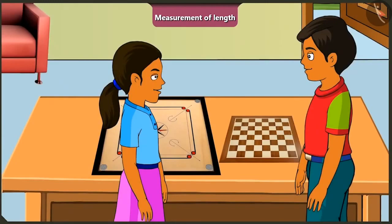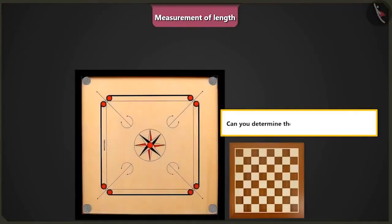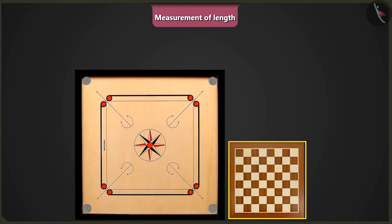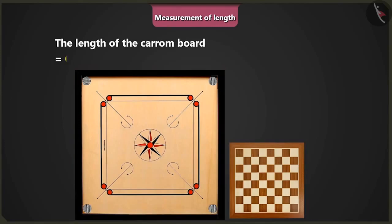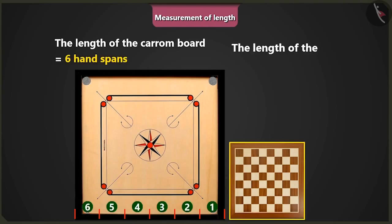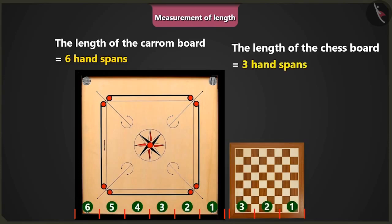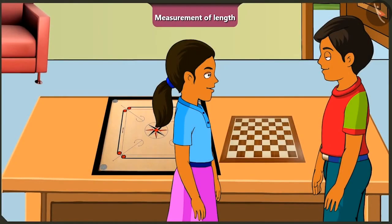Now can you determine the length of this chess board? The length of this chess board seems to be half of the carom board. The length of the carom board is equal to 6 handspans. So the chess board would be 3 handspans long. Oh wow! Absolutely correct.